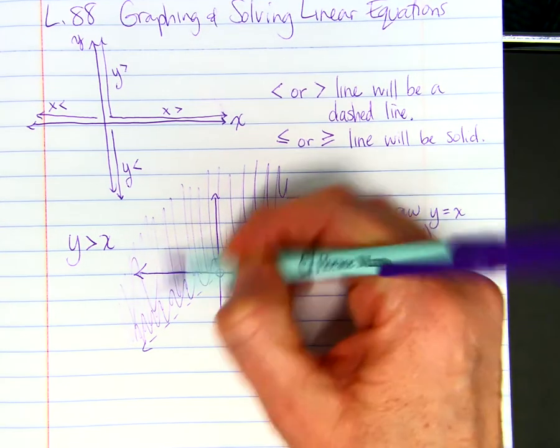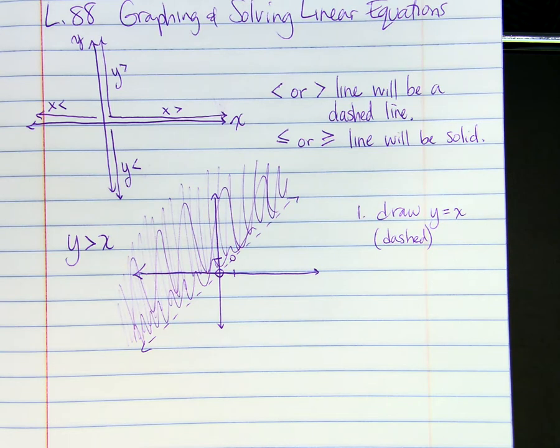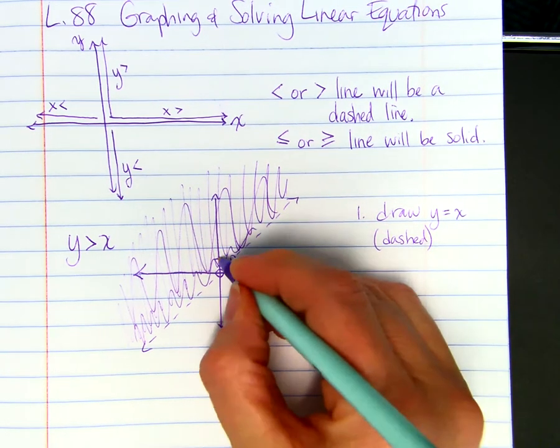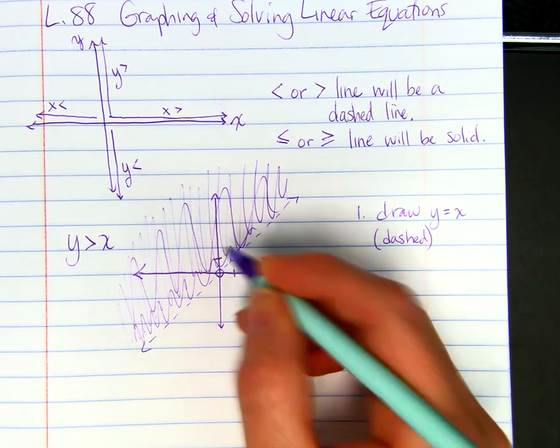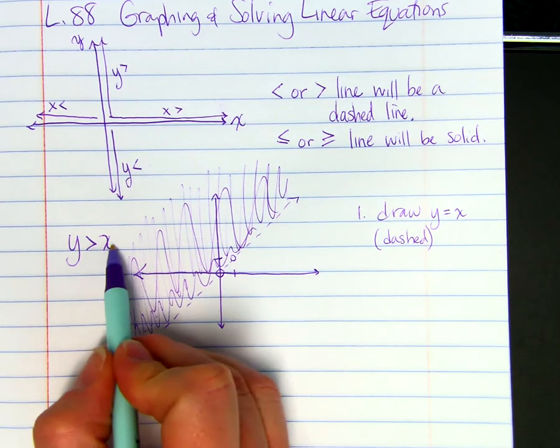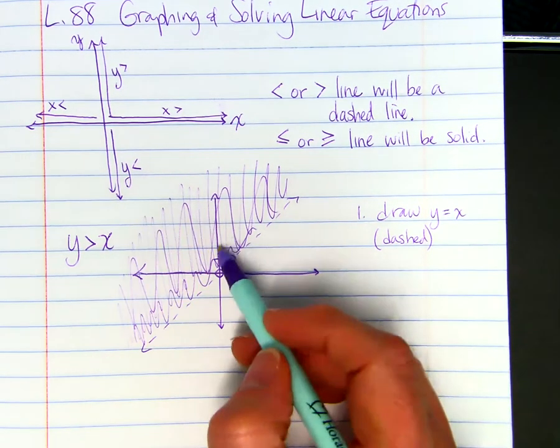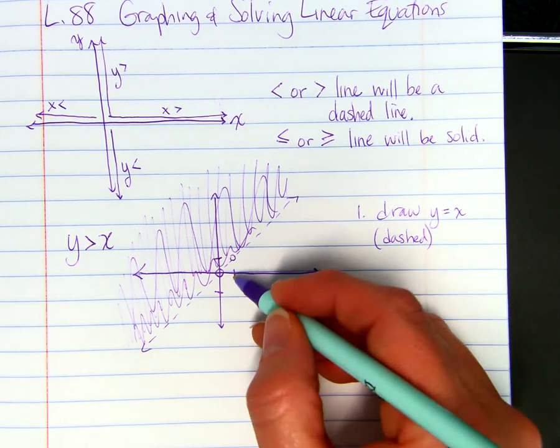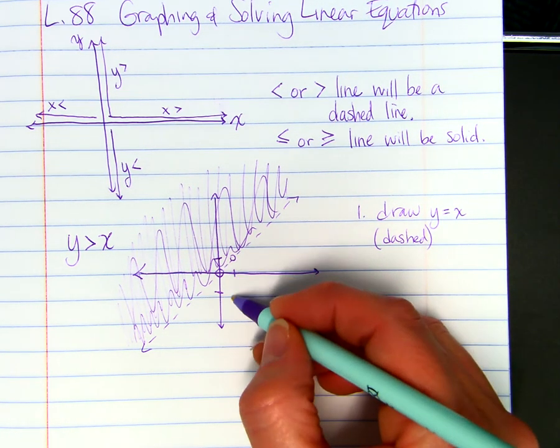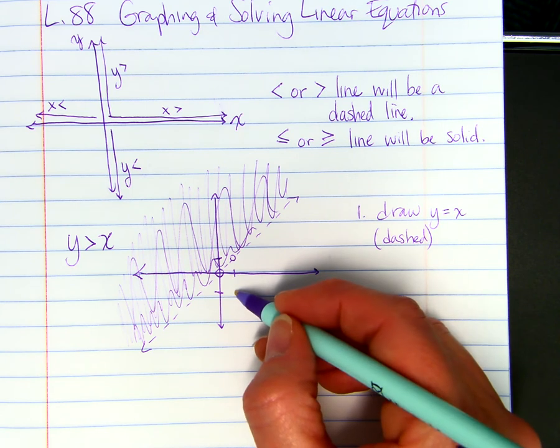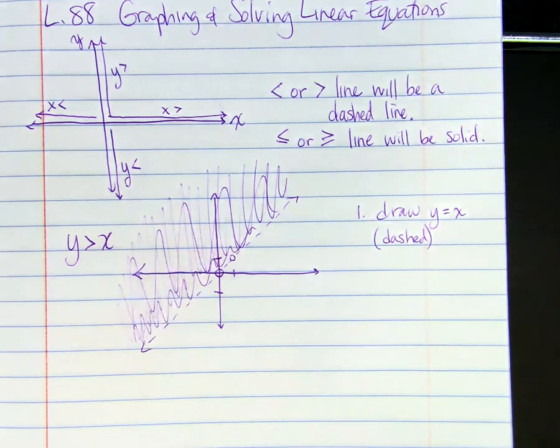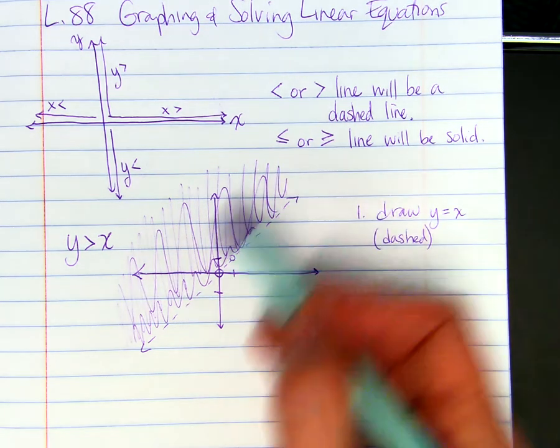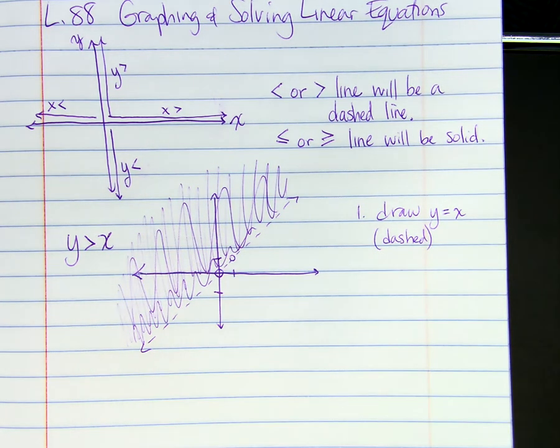And you can always check a point. So let's say if I wanted to check this point here, X is zero and Y is one. And if I plug it in, one is greater than zero and it works. So where you shaded should work. If you pick a number down here, say we did X is one, Y is negative one, this point would not work because negative one is not greater than one. So everywhere you shade, any point in this region will satisfy that inequality.